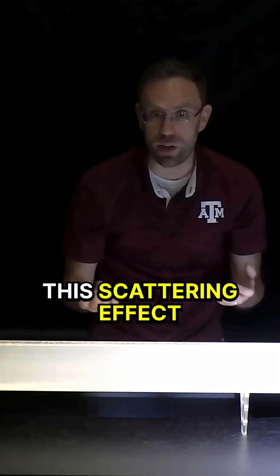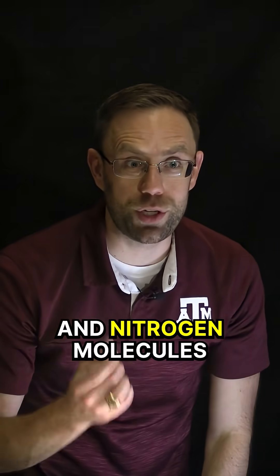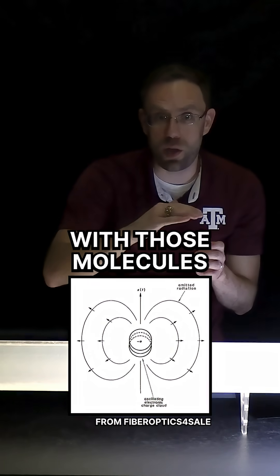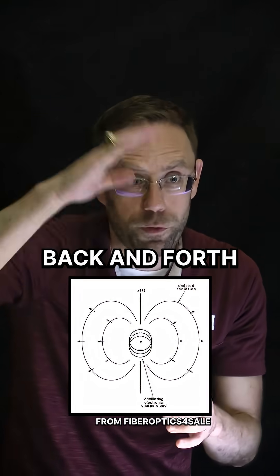Another way to think about this scattering effect is to think of these oxygen and nitrogen molecules as little antennas. So when the light interacts with those molecules, those molecules oscillate back and forth. They get excited.